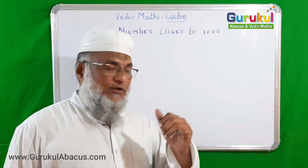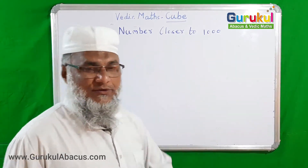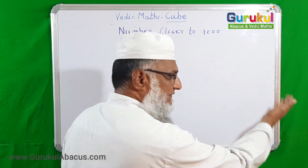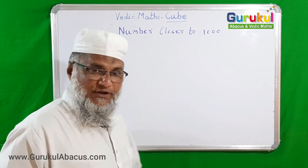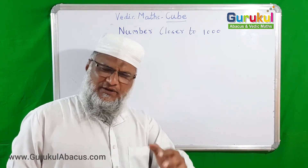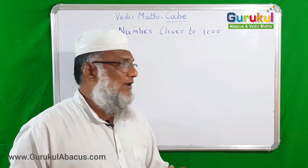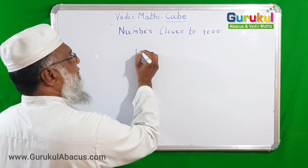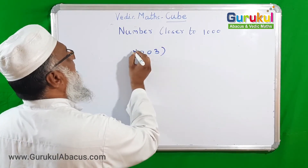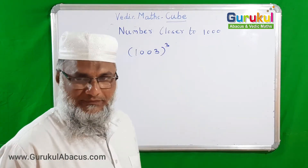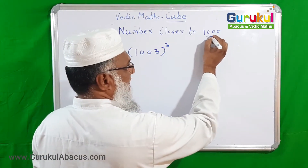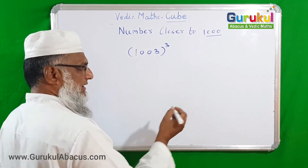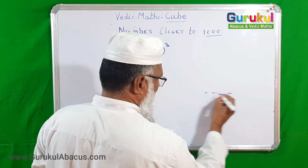Now we will learn how to find the cube of any number which is closer to 1000. There are two parts: when the number is greater than 1000 and when the number is less than 1000. First we understand the case when the number is greater than 1000 and closer to 1000. Let us take the example of 1003 cubed. It is closer to 1000, and 1000 has three zeros.